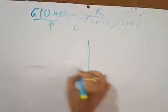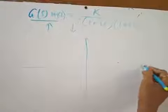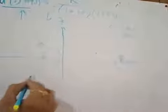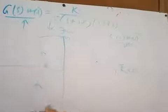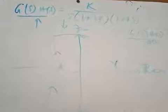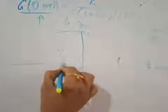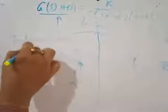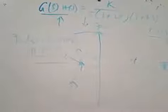So far, we have derived the GH(s) contour in the GH(s) plane. This is the real part, this is the imaginary part. We have developed the polar plot and its mirror image, completed all calculations, and plotted the GH(s) contour. The intersection point of the polar plot with the real axis is very important, and we need to find it.